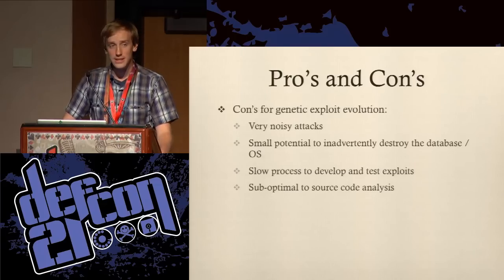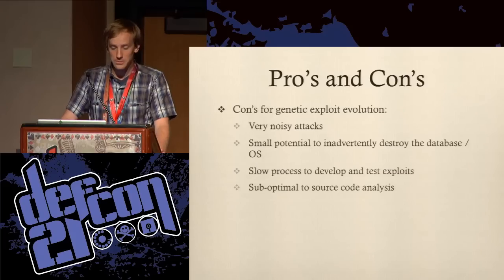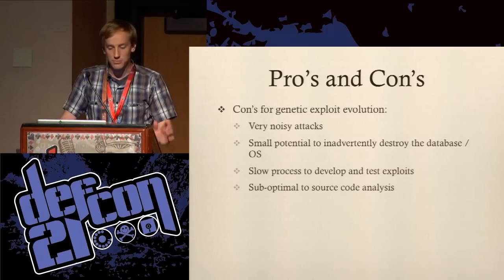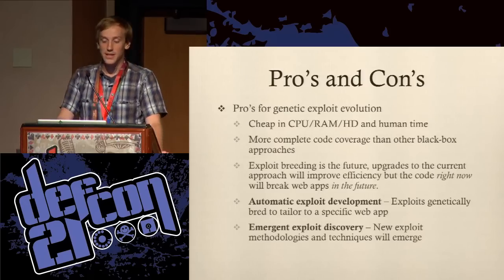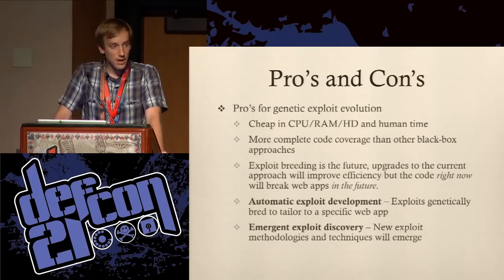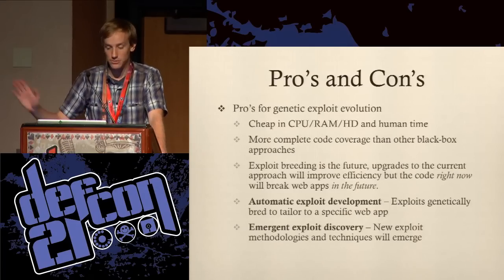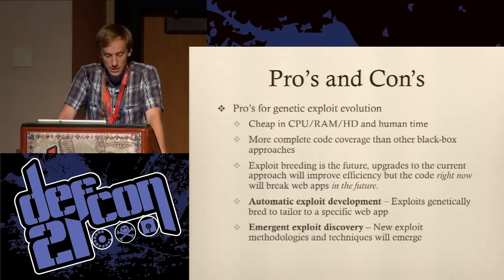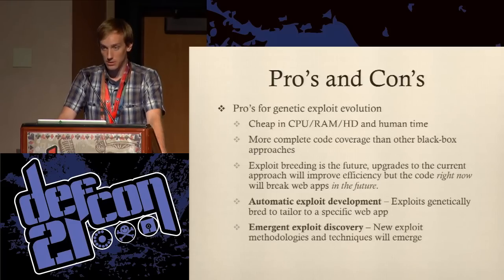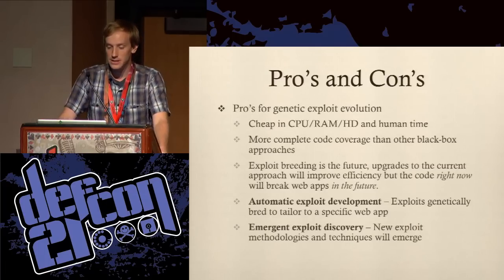Genetic algorithms will always be suboptimal to source code analysis, because there's just more code coverage you can do. But the pros are fantastic. They're really cheap in CPU, RAM, hard drive, and human time — you can run this on a Raspberry Pi. Your only limiting factor is network speed — how far away are you from the web server? As far as my time goes, I can just turn it on and it runs. I feel it has more complete code coverage than other black box approaches, because not only does it have the signatures that other black box approaches have, it also isn't bound by a box of thinking — someone saying 'this is what we know a good SQL injection to be.' It's limitless in its approach to the solution.